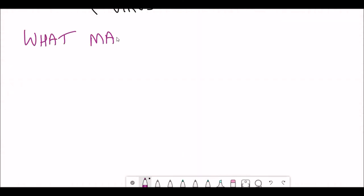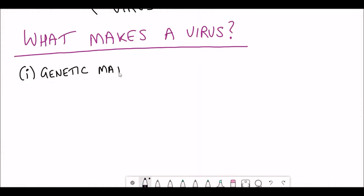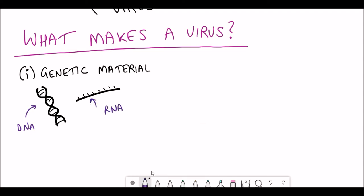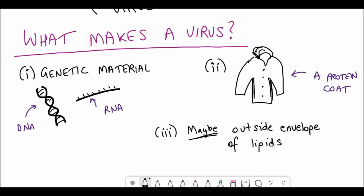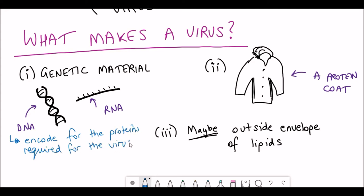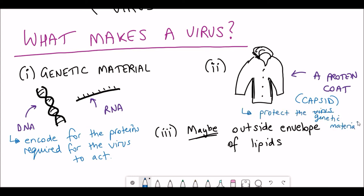So now we've established that viruses are pretty much everywhere, what actually makes a virus? Well, viruses contain certain components. They contain genetic material, and this can be found in either DNA or RNA form. Viruses also have a protein coat — very cosy — and some but not all viruses have an outside envelope of lipids. So viruses really are the bare minimum, and that's even reflected in their genetic material that literally only encodes for the proteins required for the virus to act. The protein coat protects the virus, and it's otherwise known as a capsid.